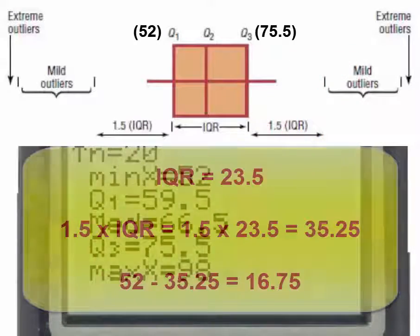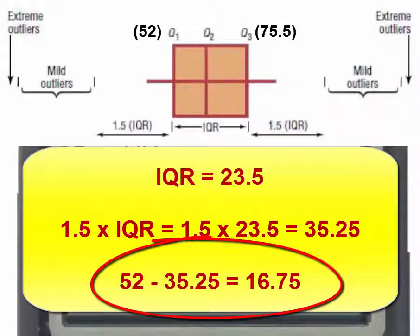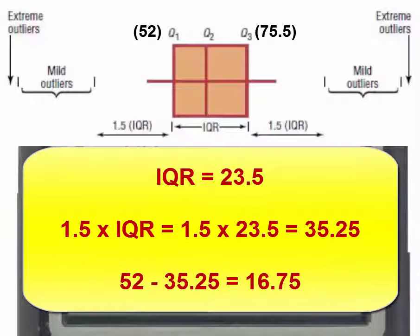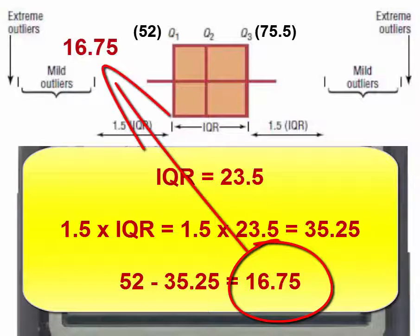And again, taking 1.5 times the interquartile range and subtracting it from Q1, we would get the value below which we would find lower outliers.